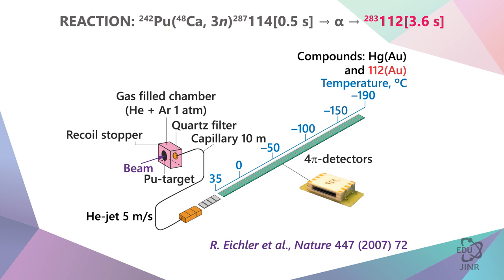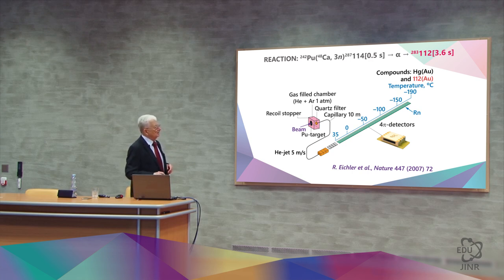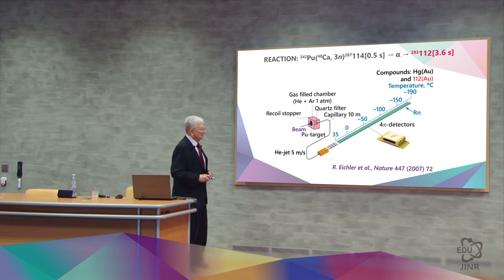But will element 112 also produce an amalgam? Will it also combine with gold, the way mercury does? Or is it neutral and therefore will not connect? Or will it behave like radon, which is a noble gas and which passes through the system to the end without reacting with the walls of the detector and stops only where the low temperature equals the temperature of its condensation?